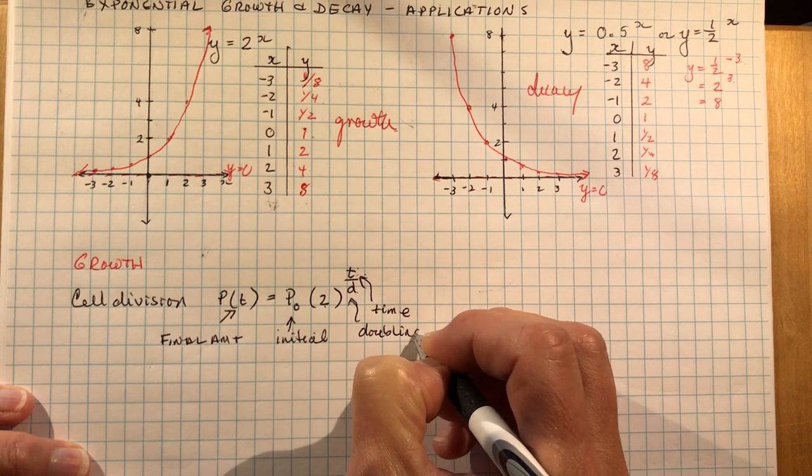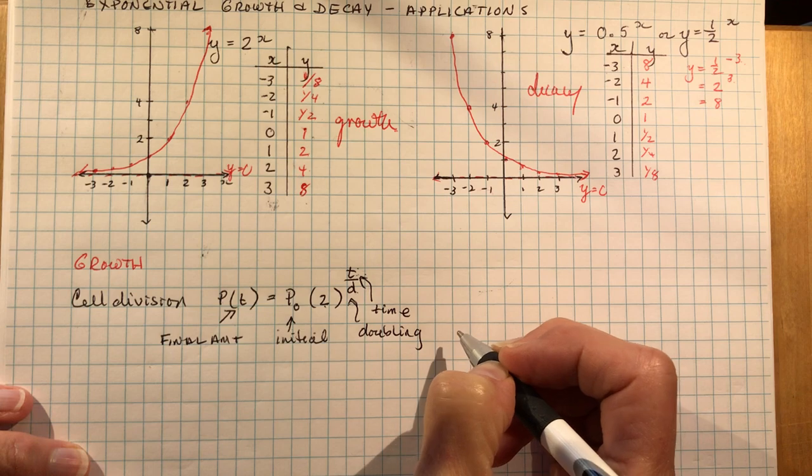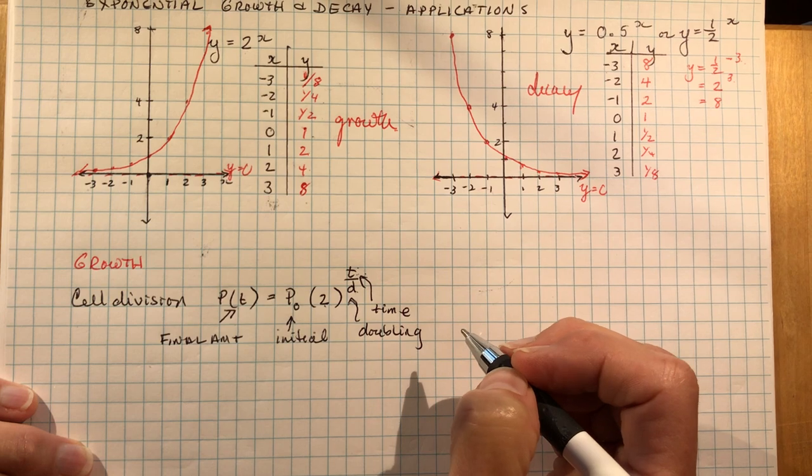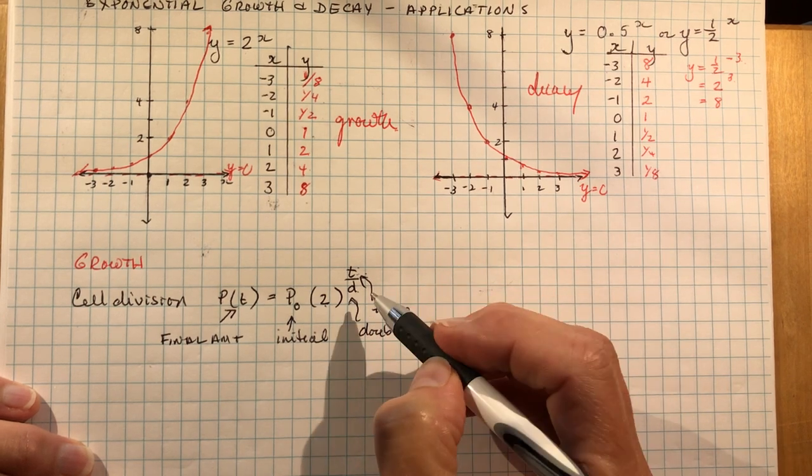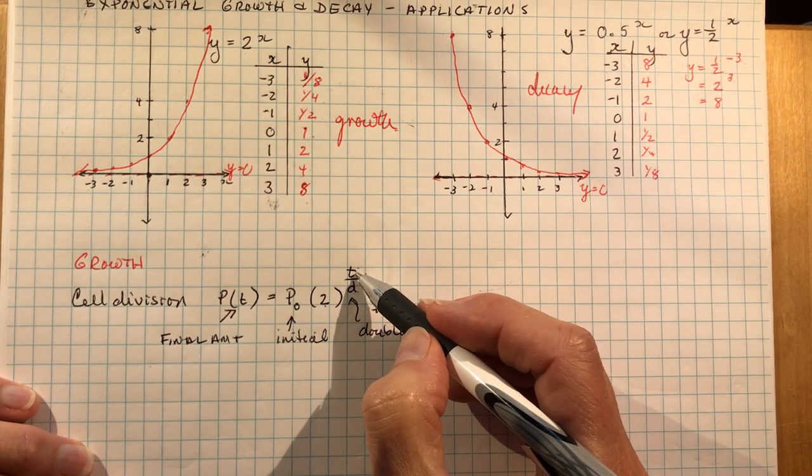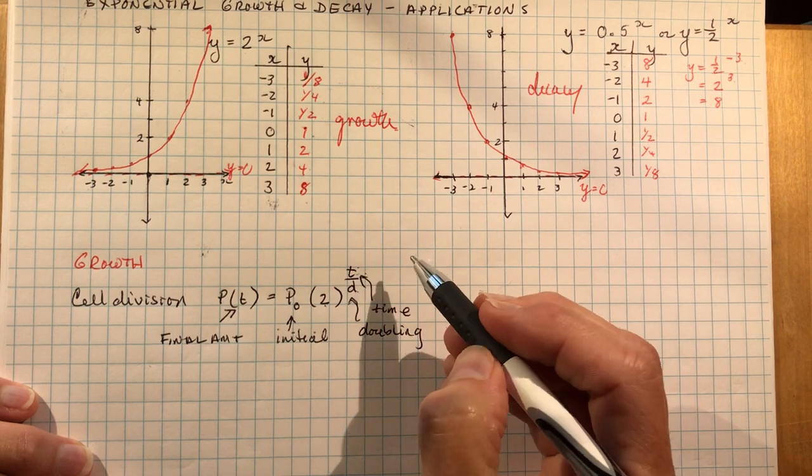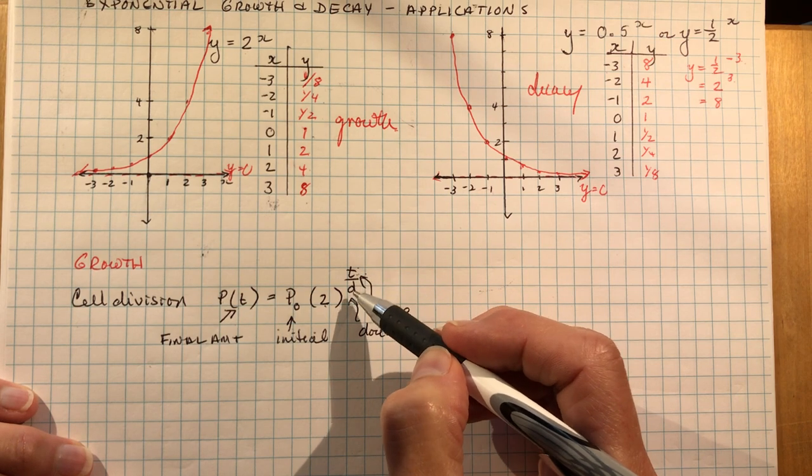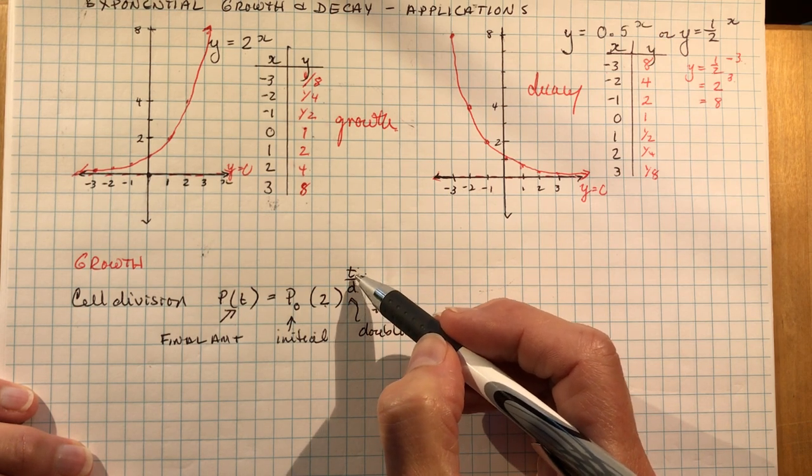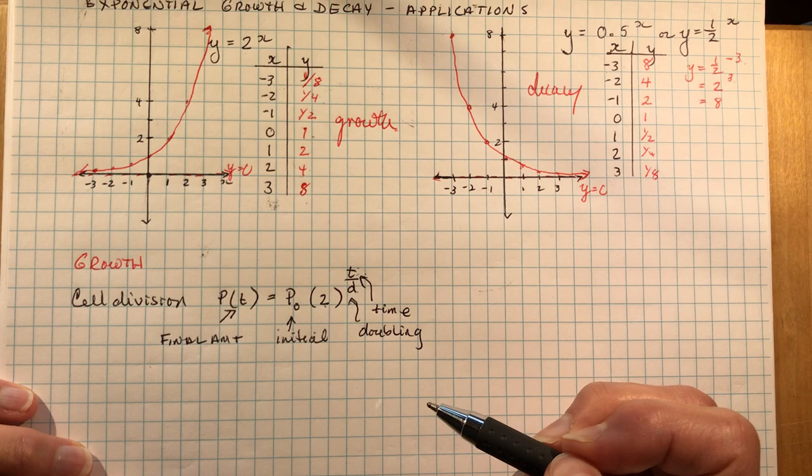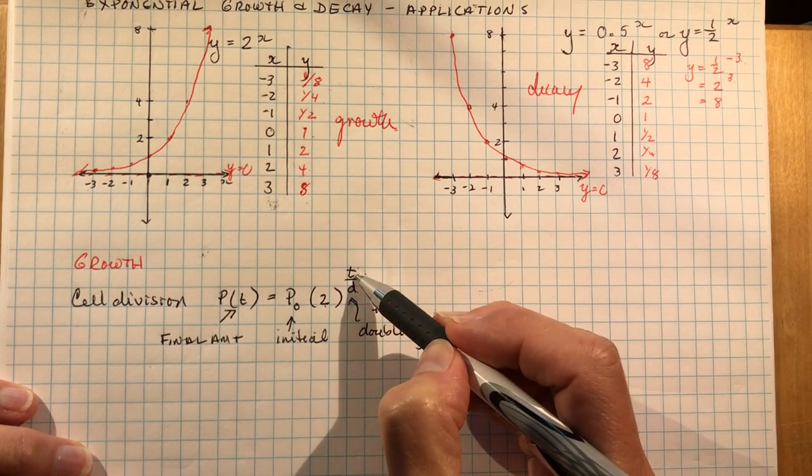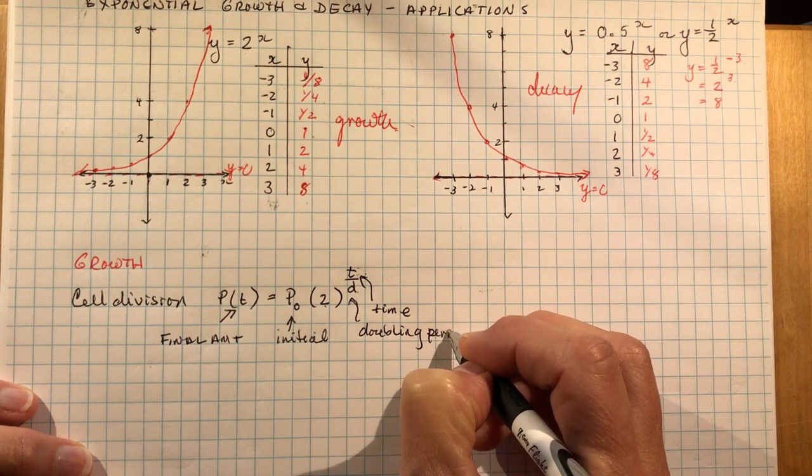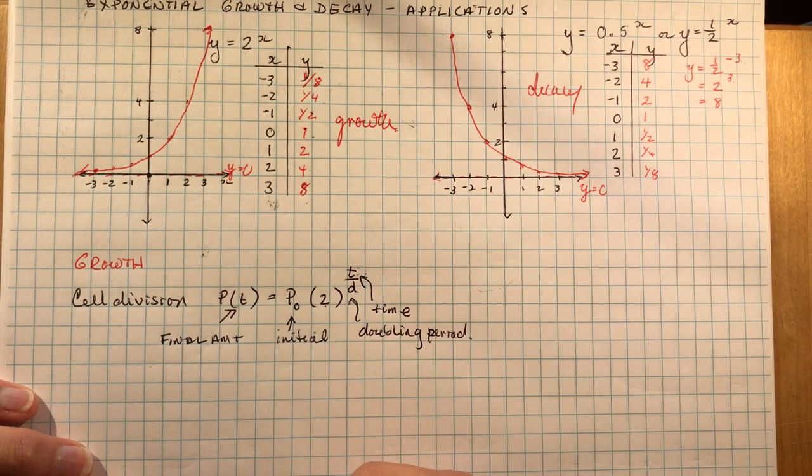The doubling period can change depending on the type of cell that you have or the type of bacteria you're dealing with. Maybe some take three days to double. So in order to have any doubling at all, three days would have to go by. Three days divided by three means it doubled once. If I said 12 days went by, then you would say that it doubled 12 divided by three or four times. So time passed divided by the doubling period. And that's a cell division question.